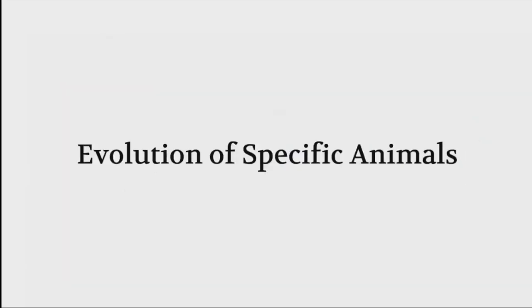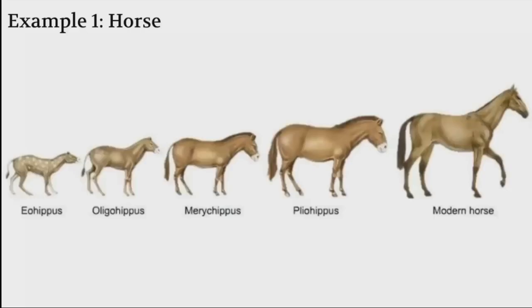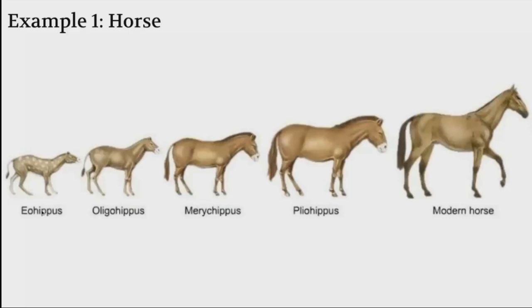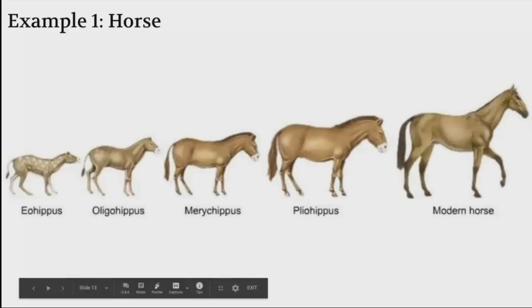Now the evolution of specific animals. Example one is the horse. It started as the Eohippus, a really small tiny mammal. Over many years it develops into a modern horse. There are many reasons why the neck became elongated, their tails grew, and their legs shaped into different structures, all because they had to adapt to their environment.